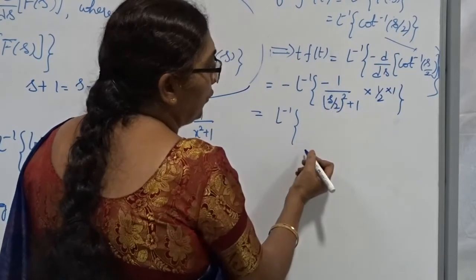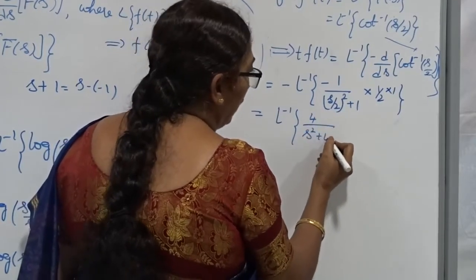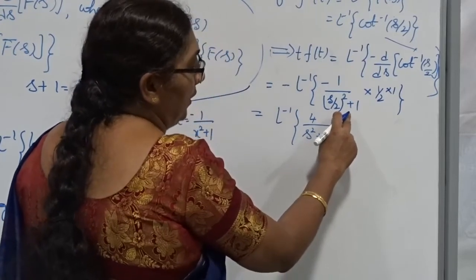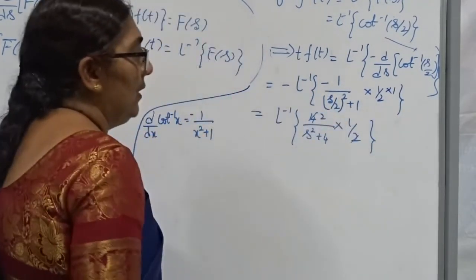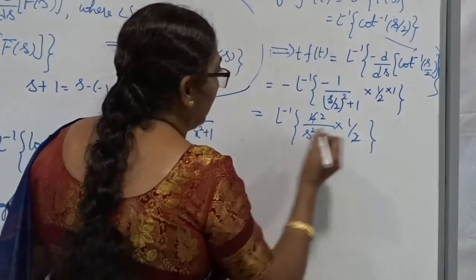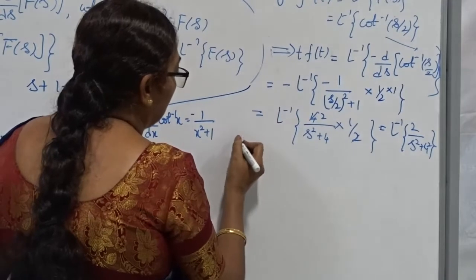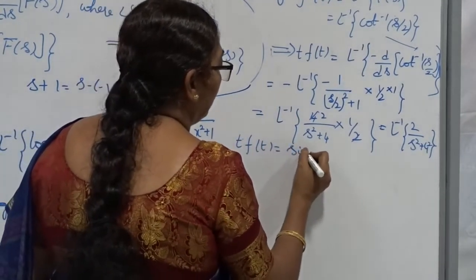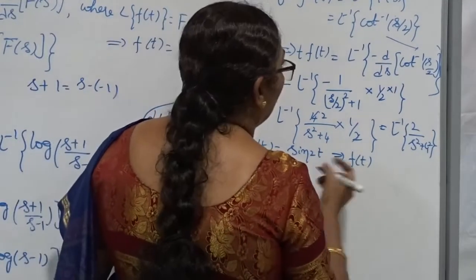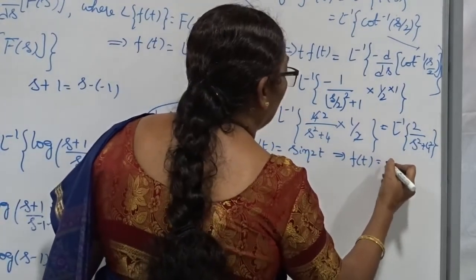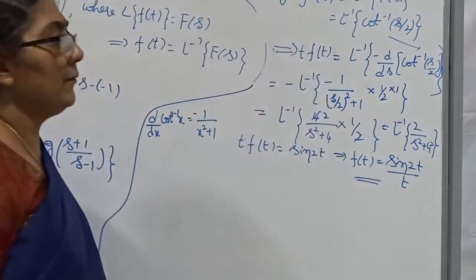Taking 4 as the common denominator: 4 divided by (s²+4), because taking 4 in the numerator gives (s²+4)/4, and multiplying by 1/2 the 2 cancels, leaving 2/(s²+4). This is directly in standard form: L⁻¹ of 2/(s²+4) is nothing but sin(2t). Therefore t·f(t) = sin(2t), which means f(t) = sin(2t)/t.